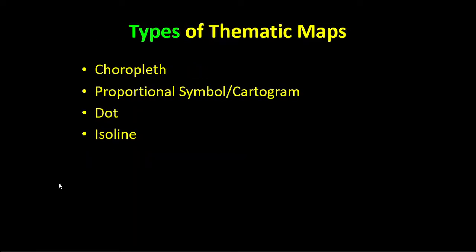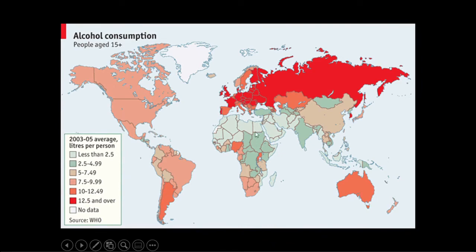There are four types of thematic maps. First, a choropleth map. Second, a proportional symbol map, also referred to as a cartogram. Third, dot maps. Fourth, isoline maps. A choropleth map shows different shaded geographic areas with categorized data — for example, showing alcohol consumption where red areas have higher consumption and green areas have lower consumption. Choropleth maps are common in demography, political maps, voting behavior, and US Census data.